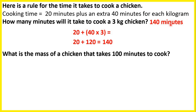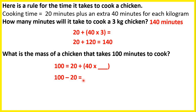What is the mass of a chicken that takes 100 minutes to cook? So 100 minutes equals 20 minutes plus 40 times what? If we subtract 20 from 100, that gives us 80, so we need to think: 40 times what is 80? Well 80 divided by 40 is 2, so a 2 kilogram chicken will take 20 plus 40 times 2, which gives us 100 minutes. So the mass of the chicken is 2 kilograms.